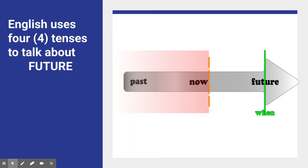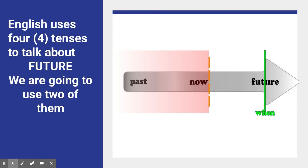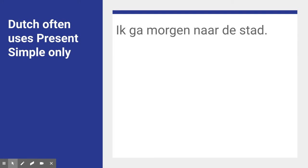English normally uses four tenses to talk about the future — four different ones. And we are going to use two of them, so not all four, but two.